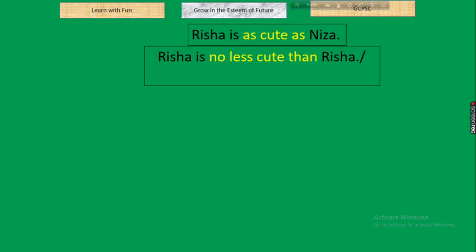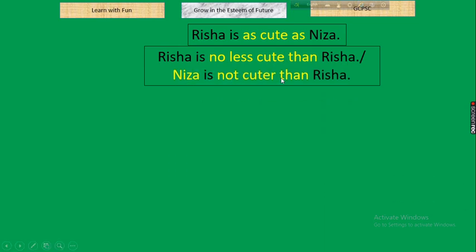Next: 'Risha is as cute as Nizza' — a positive degree sentence meaning they are equal. Negative equivalents: 'Risha is no less cute than Nizza' (same subject), or 'Nizza is not cuter than Risha' (using the last noun as new subject). Rule: as + adj + as → no less + adj + than; or change subject → not + adj + comparative + than.